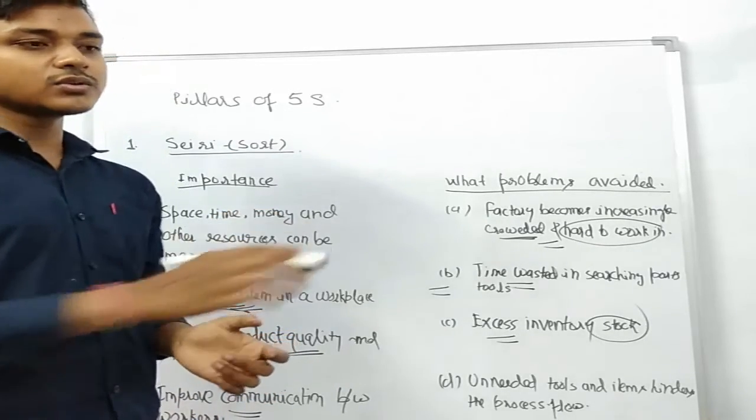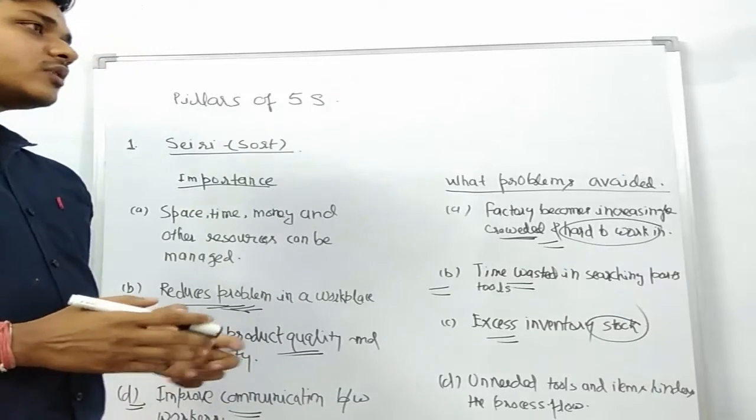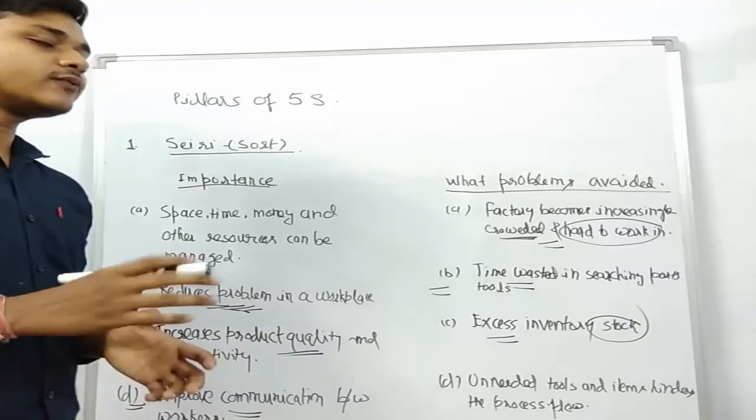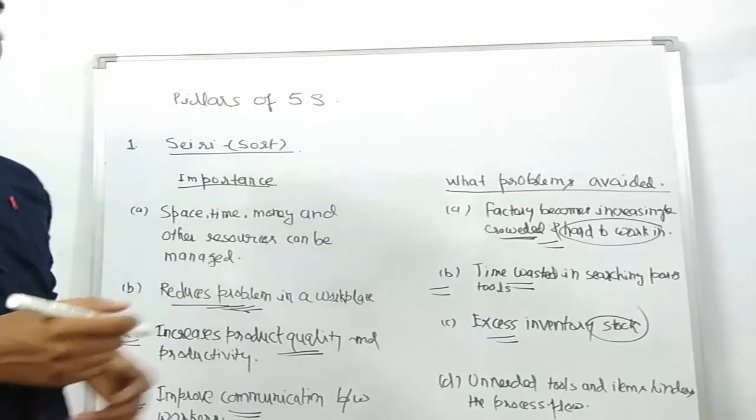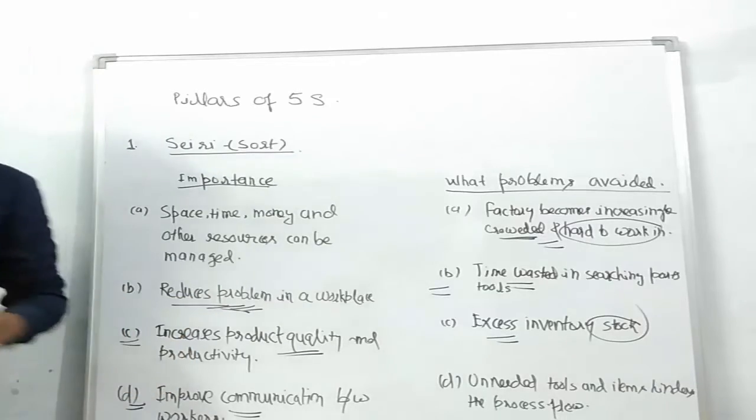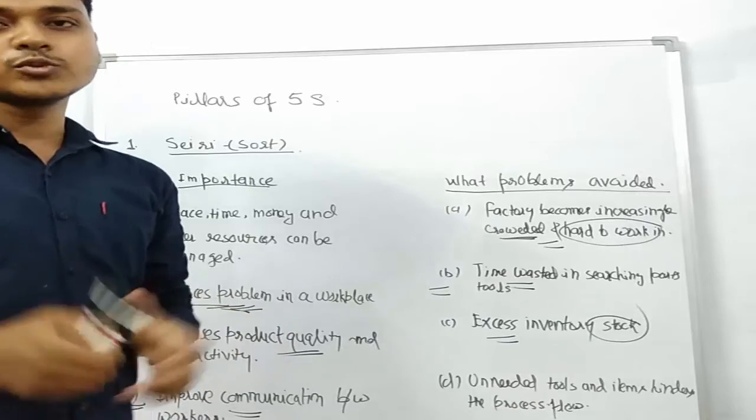A part goes through several steps of process, then we get a final output product. When we are making a product, generally it follows 5 to 7 steps in a line. In a manufacturing assembly line, generally there are a minimum of 7 to 8 steps for the final output product.